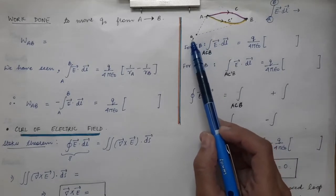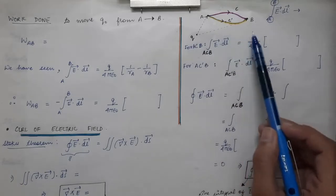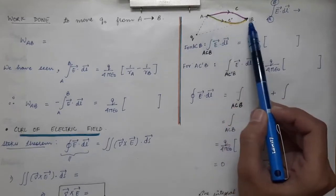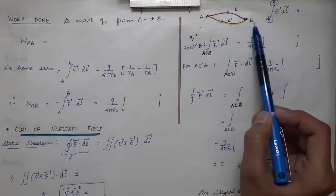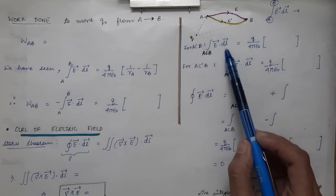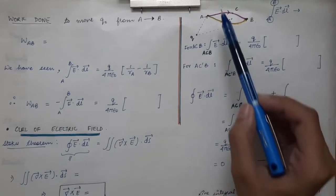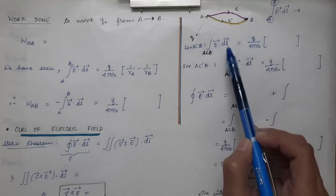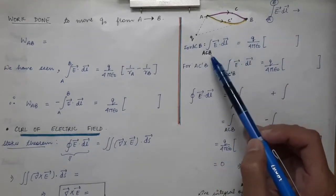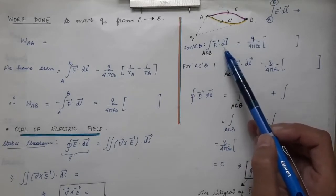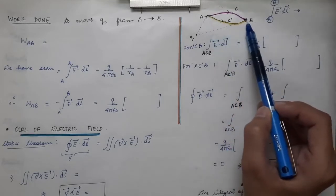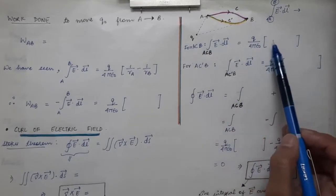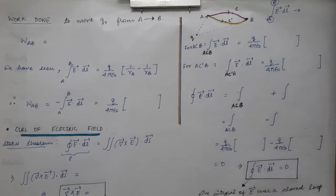Here I have taken a source charge Q. In the surroundings of this source charge Q there will be an electric field. I am taking a point A in space and another point B at another position in space. We are going to evaluate the line integral of electric field taken over the path ACB — the path drawn in pink color. The line integral over this path equals Q divided by 4π ε₀ into (1/R_A minus 1/R_B).